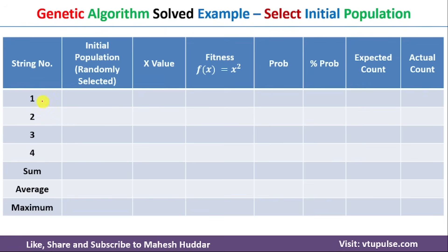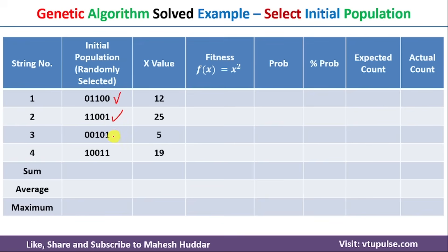The calculations will be done in the form of a table with columns for string number, x value, fitness, and so on. I have written string numbers 1 through 4. The initial population was selected randomly: the x values for those solutions are 12, 25, 5, and 19, all within the range 0 to 31.